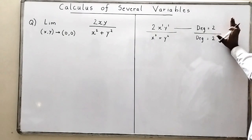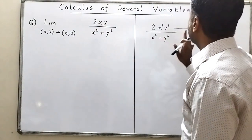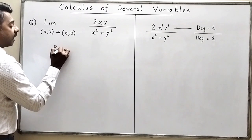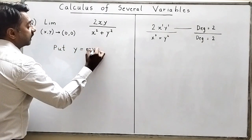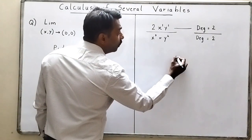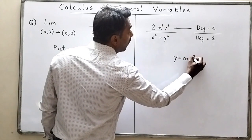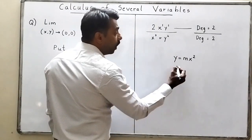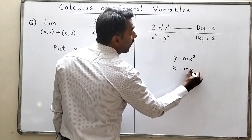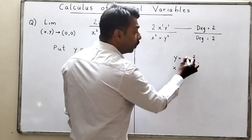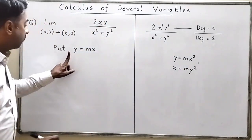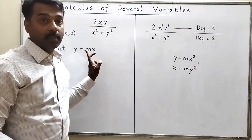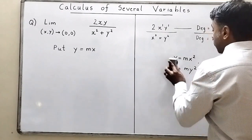Whenever the numerator and denominator have the same degree, we simply put y equal to mx. In upcoming problems you may sometimes need to substitute y = mx², y = mx³, x = my², or x = my³. When to use which substitution — that is what we are going to learn. When both numerator and denominator have the same degree, substitute y = mx.